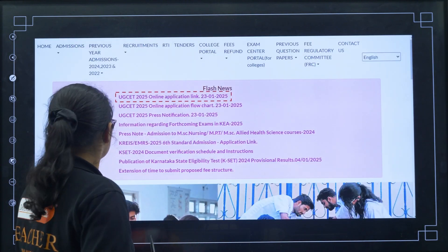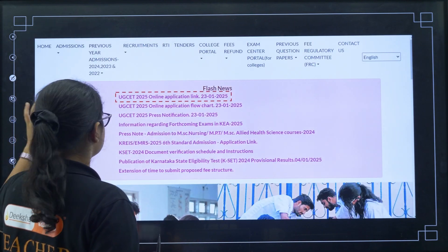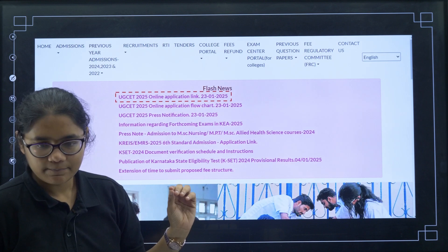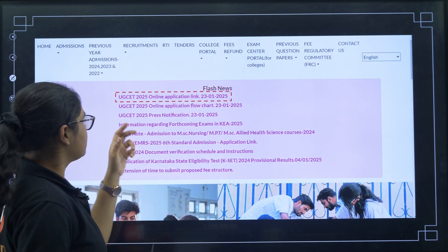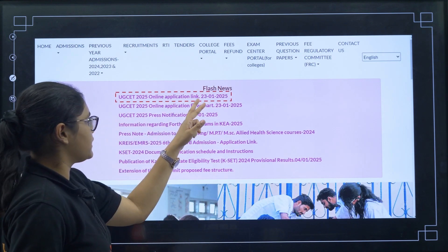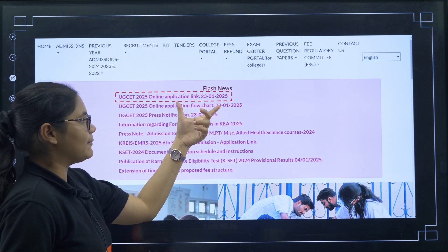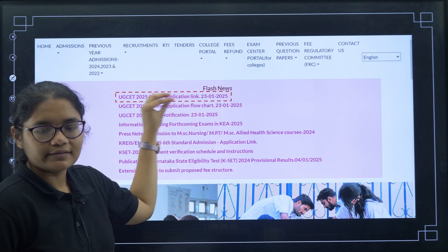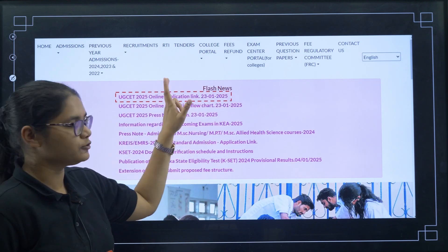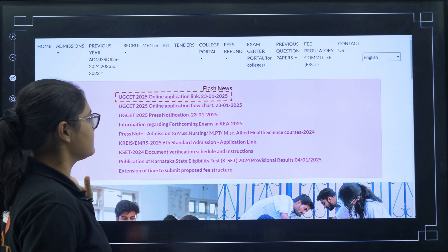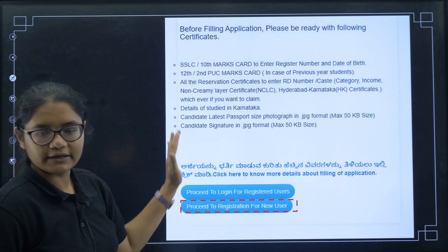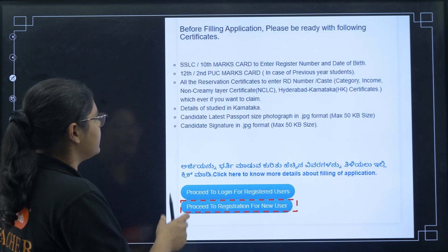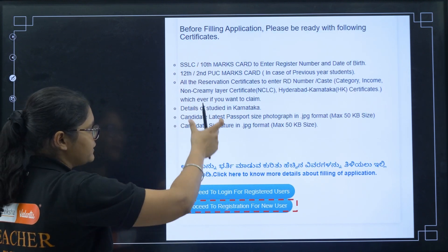To register, go to any browser and type KEA. You can find the UGCET 2025 online application link there. You can see it flashing in the flash news — click on that first link. Once you click on it, you will be directed to a page showing a list of documents that will be required for registration.